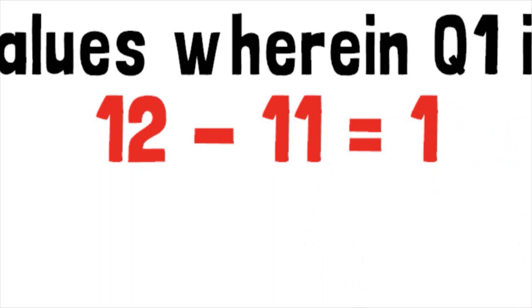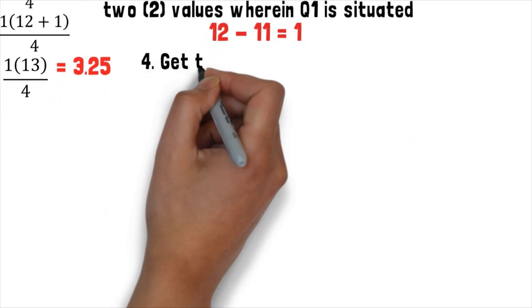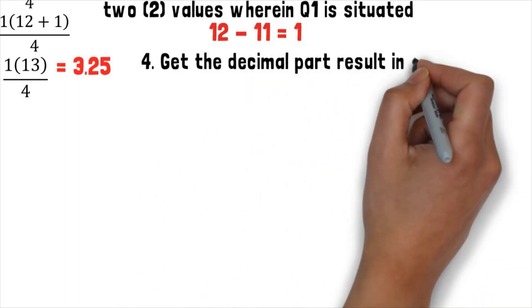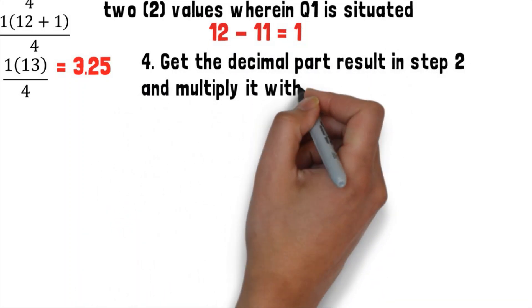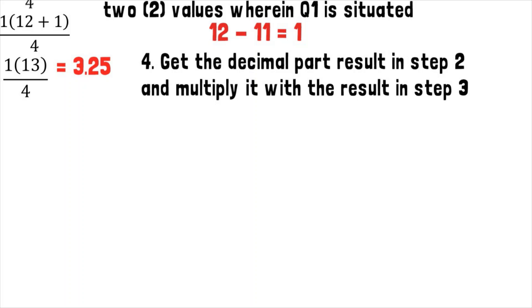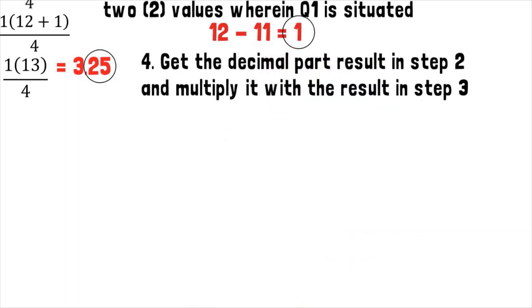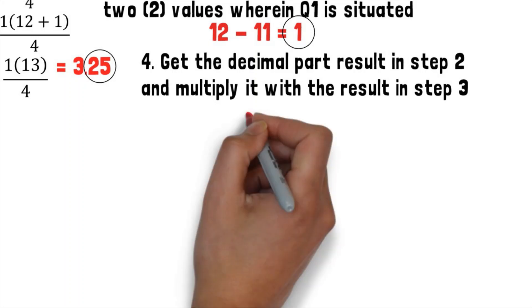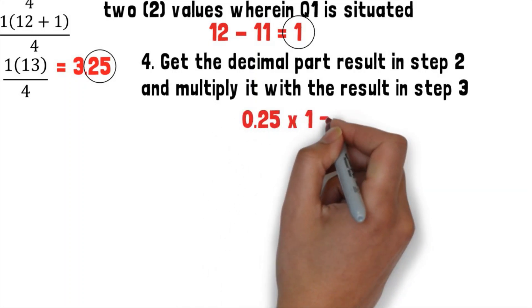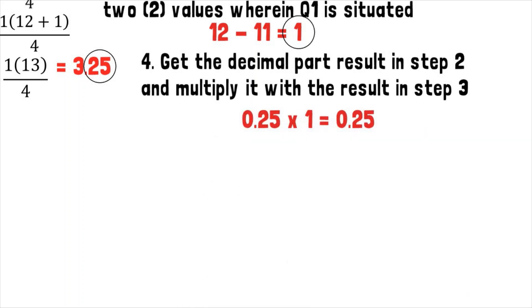Next, in step 4, we'll get the decimal part from step 2 and multiply it with the result in step 3. The decimal part in step 2 is 0.25 while the result of step 3 is 1. That means in step 4, 0.25 times 1 equals 0.25.